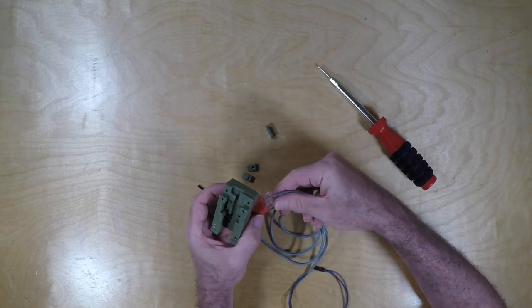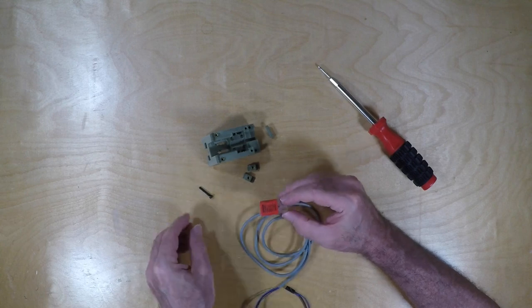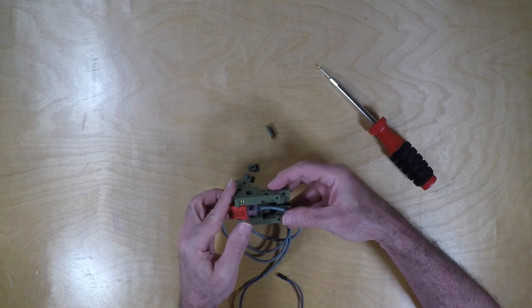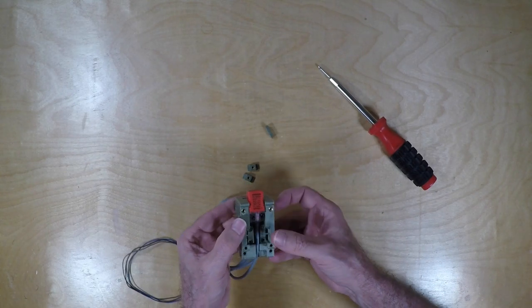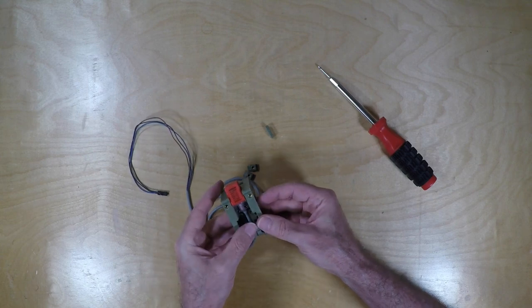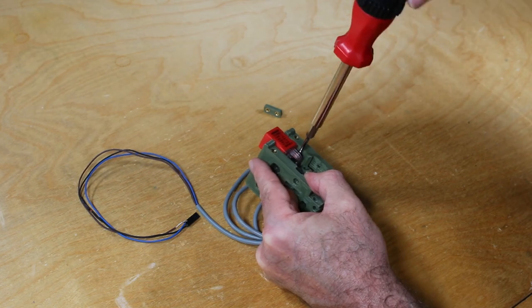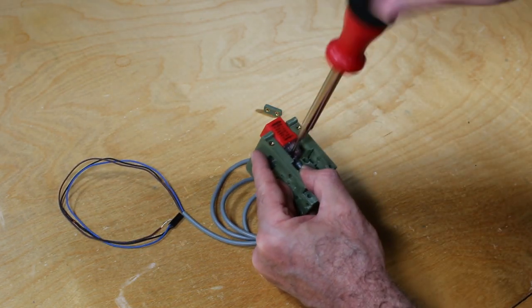And then we attach the probe and we'll tighten using the M3 by 20 screws. For me these screws were a tight fit so I had to screw them in before putting the nut on the back with the heat sets.